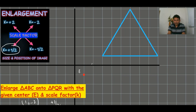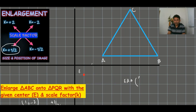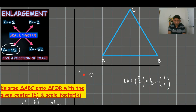The column vector from E to A is (2, 2). Multiply (2, 2) by one-half: one-half times two is one, giving (1, 1). This is the position of P. Note that enlargement does not always mean the size gets bigger — sometimes the size can be smaller, and that is possible.